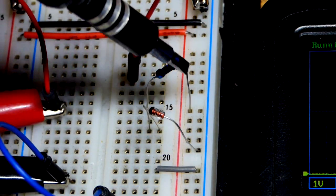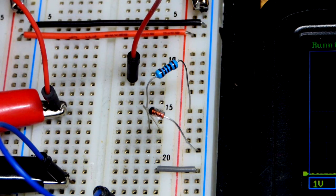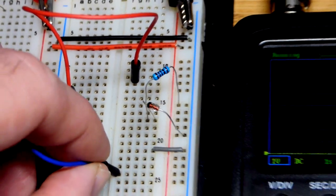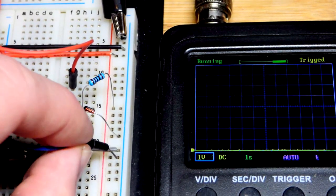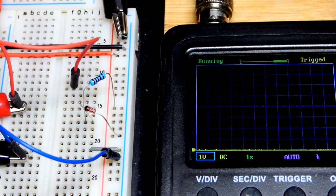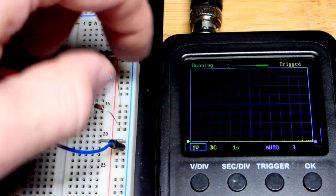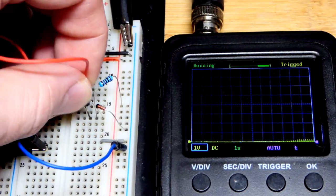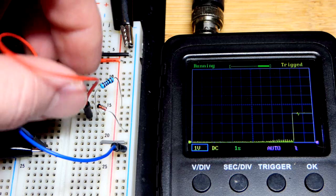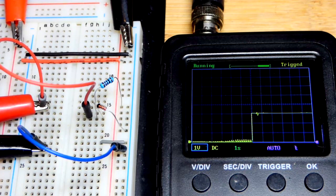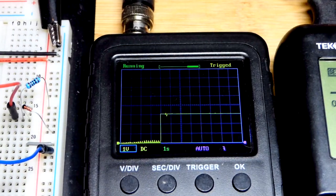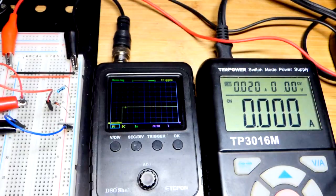So we have the oscilloscope here and we're gonna put the black alligator clip to this blue jumper to ground, the zero volt reference point. And the red one we're gonna connect - it also has an alligator clip connected to it from the oscilloscope - to where the zener diode and the resistor is. So right now it's three volts because the power supply is three volts.